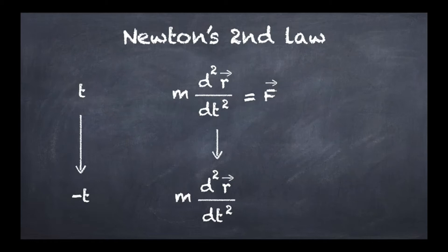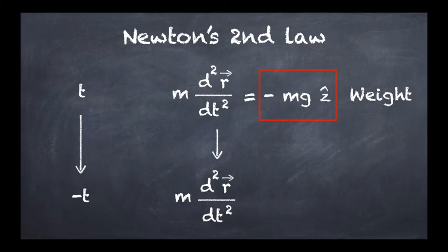For Newton's second law to be time reversible, we need the right-hand side to also be exactly the same. Let's have a look at the right-hand side for specific cases. The first case is the weight, one of the most well-known forces in mechanics. This is minus mgẑ, where ẑ is a unit vector in the vertical direction and g is the gravitational acceleration on Earth.